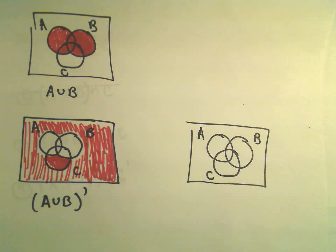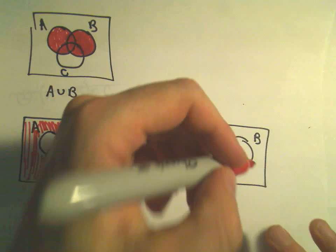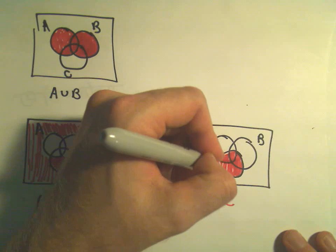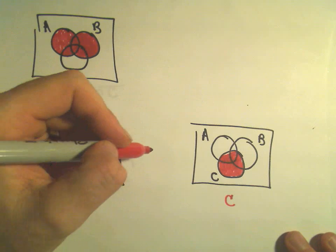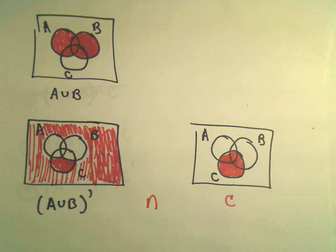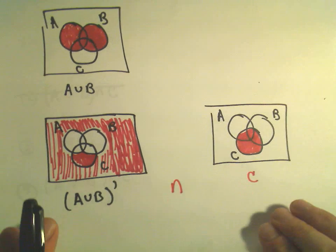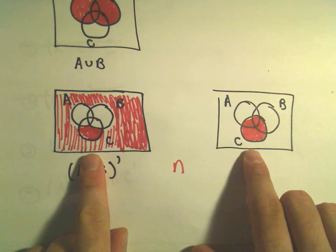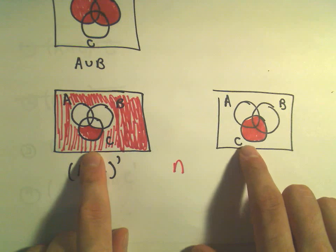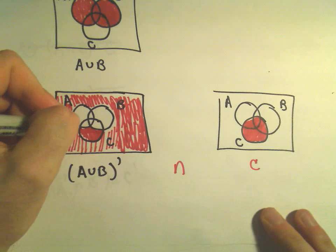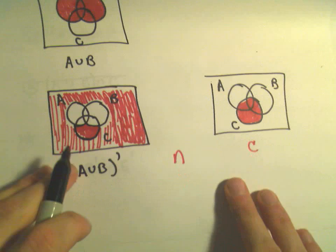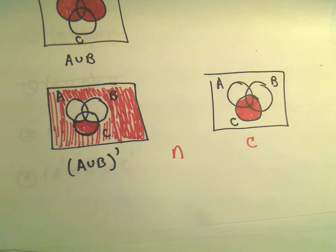So A, B, and C. Well, again, if we just shade in the set C, we'll just shade in that circle. And again, in this case, since we want to do the intersection, that means we need to find the overlap of these two regions. Well, if you compare what's shaded in the left diagram with what's shaded in the right diagram, the only thing that's shaded in both diagrams is this little region, kind of the bottom part of circle C. So that would be our final answer here.